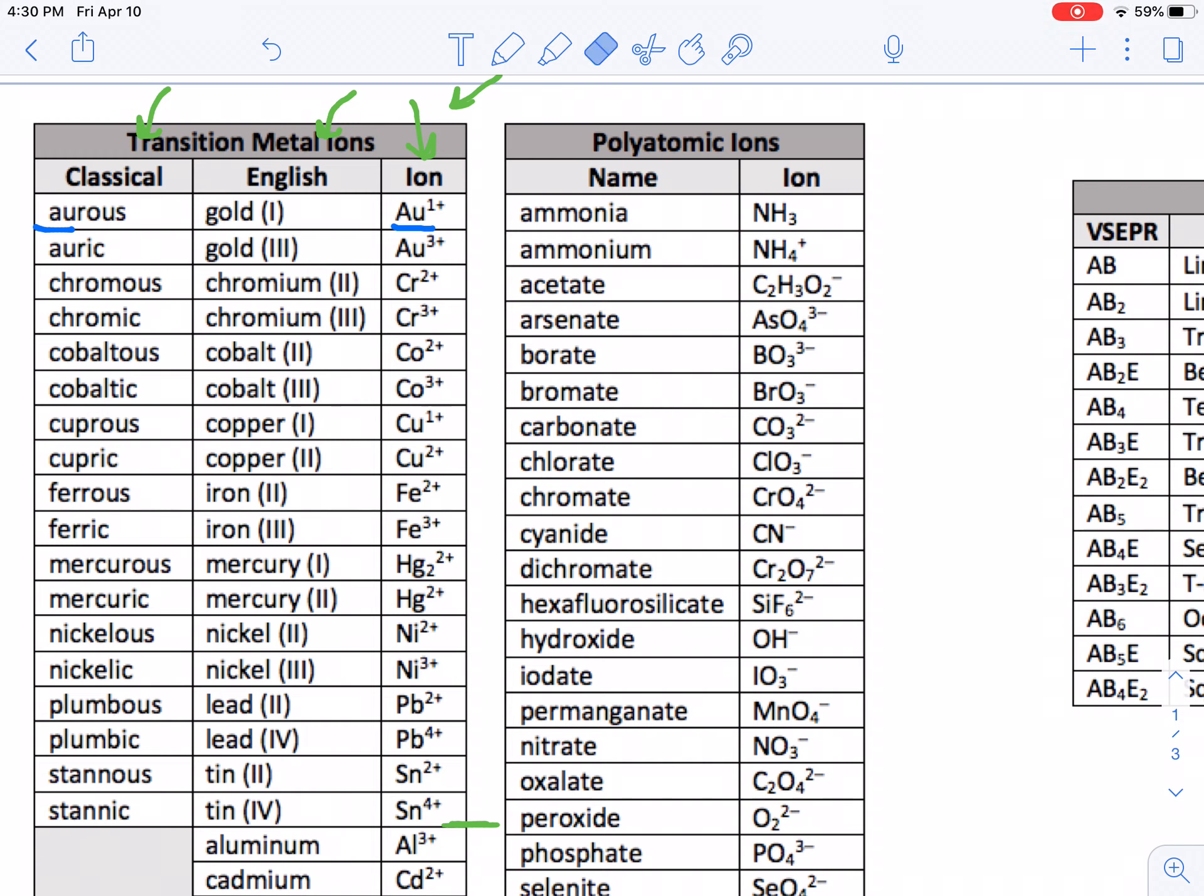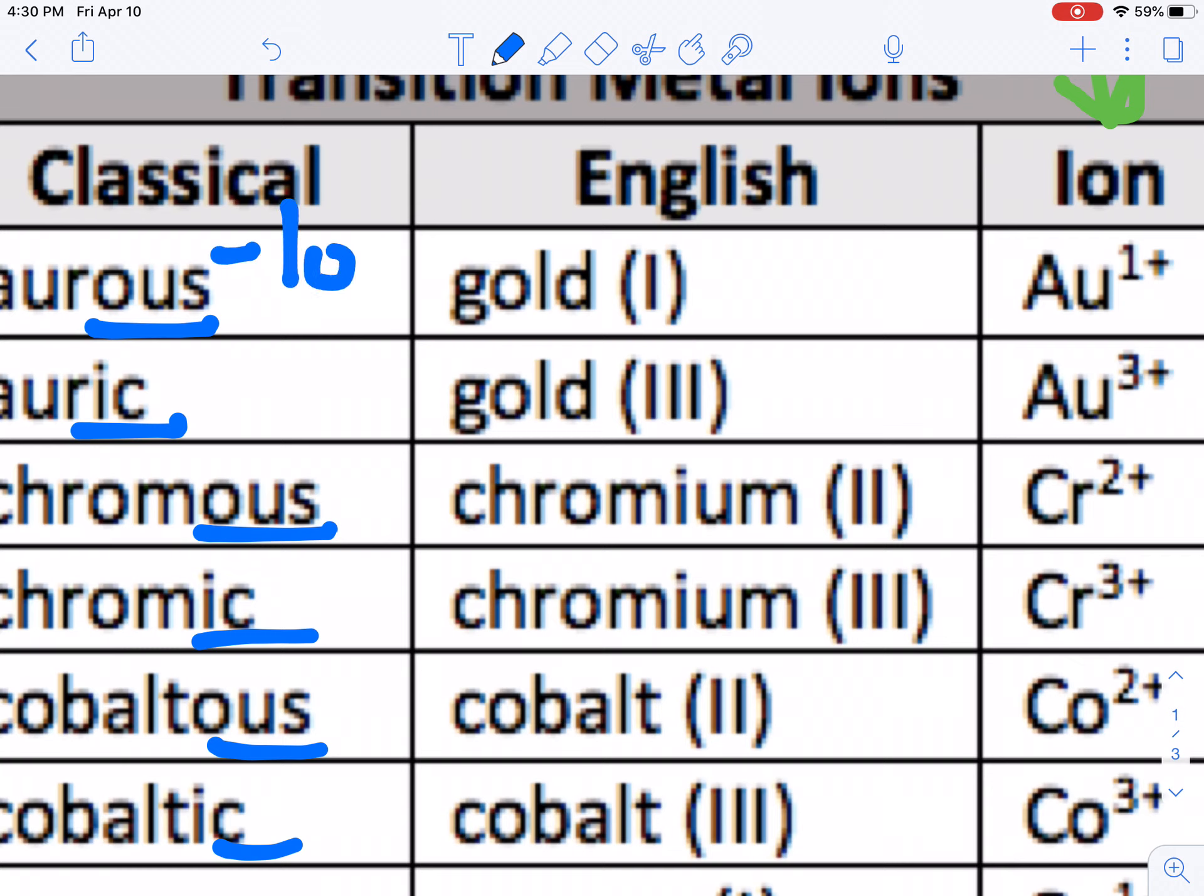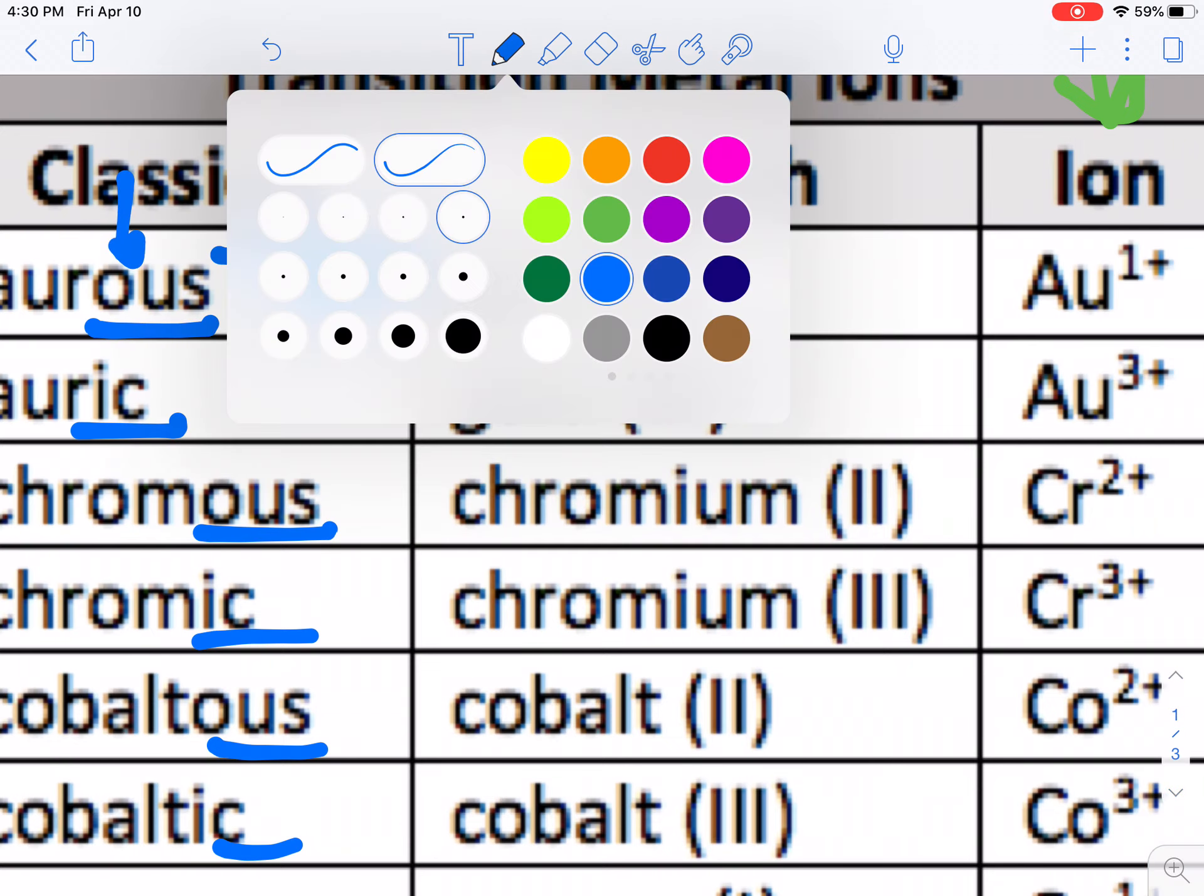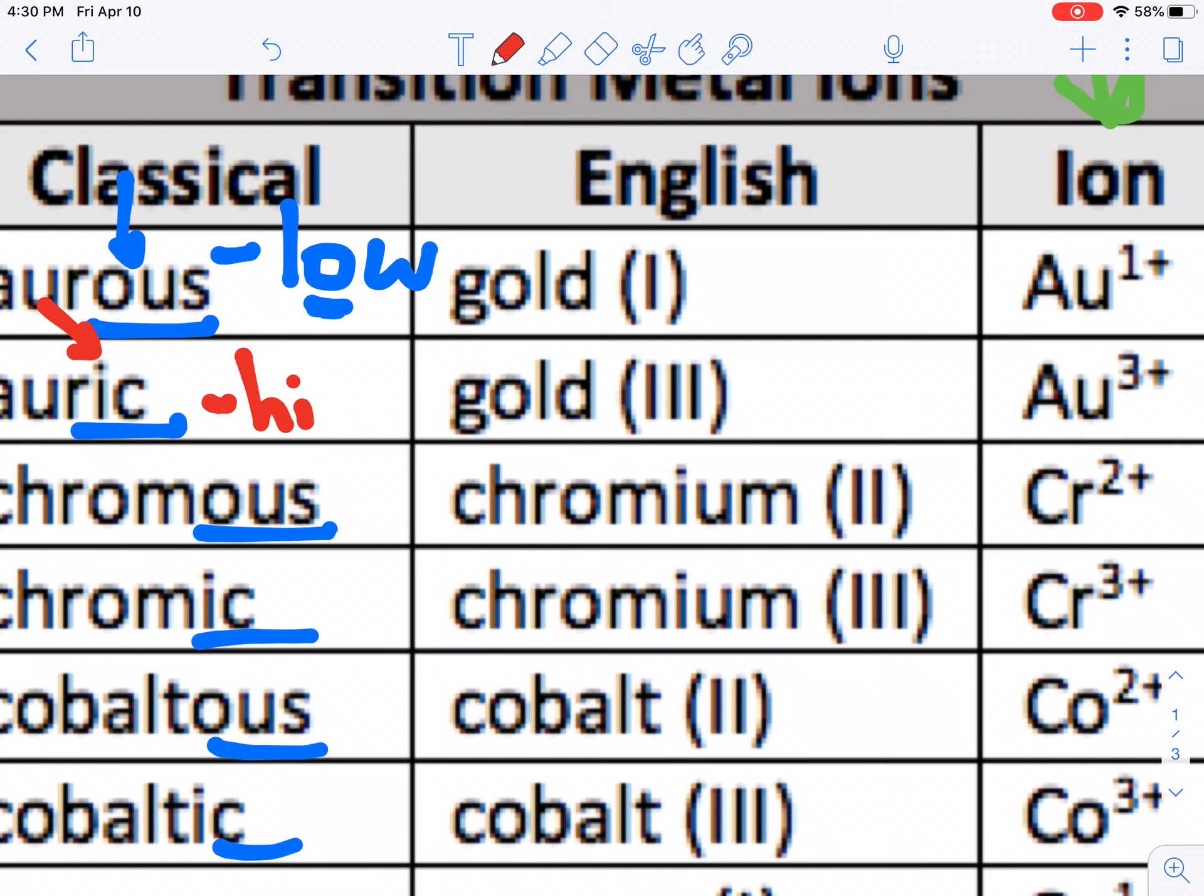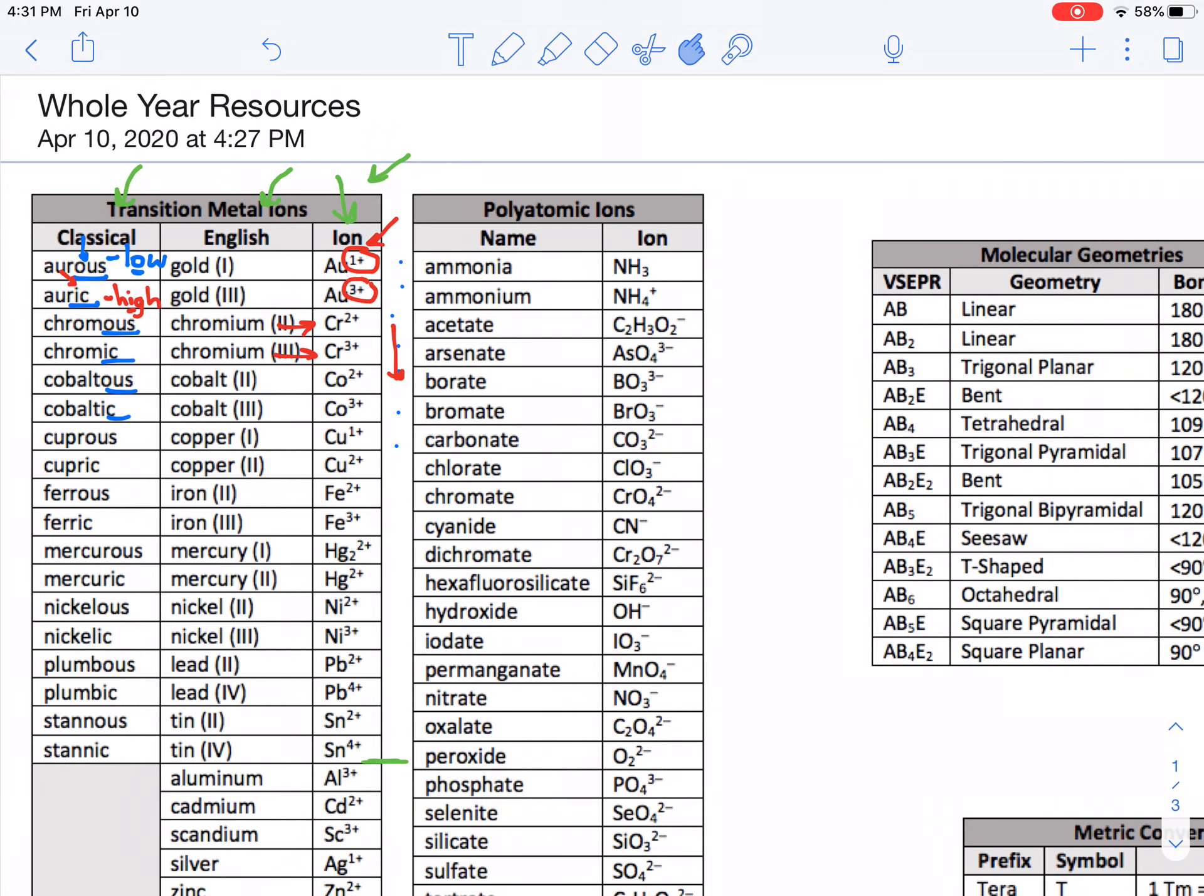The other thing to be aware of with the classical names is you'll notice that all the classical names either end with OUS or IC. OUS, IC, OUS, IC. And you'll also notice, if you look really closely, that the OUS version of every single one of these ions going down the list is the one with the lower charge. So OUS has an O in it. Low has an O in the middle of it. OUS starts with O. Conversely, IC starts with I and high has an I in the middle of it. So again, what do I mean by that? Well, gold has two charges, plus one and plus three. The lower of the two, one is less than three, ends with OUS. And that's the case for all of these. Now, they're not all plus one and plus three. Notice chromium is plus two and plus three. Whichever one is less is always going to have an OUS ending. Whichever one is more is always going to have an IC ending. So that's one way of navigating your way through this table. Now, you'll have this table on a test, so you don't need to memorize it, but it's helpful to be able to find stuff quickly with these little tricks.